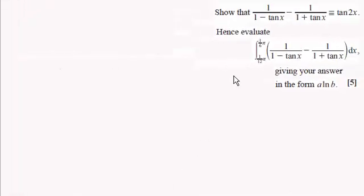Hi there. Now in the first part of the question we were asked to show that the identity 1/(1 - tan x) - 1/(1 + tan x) was identical to tan 2x.